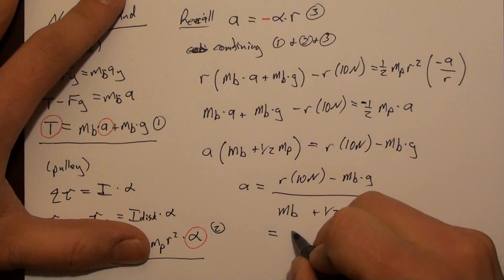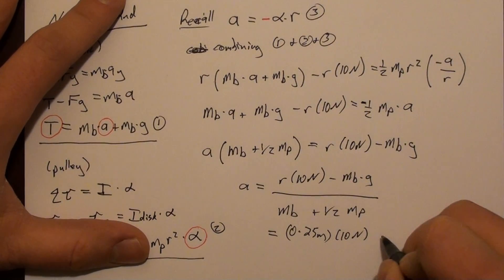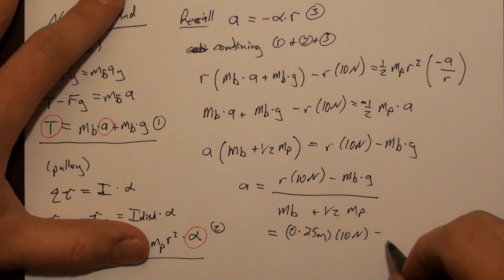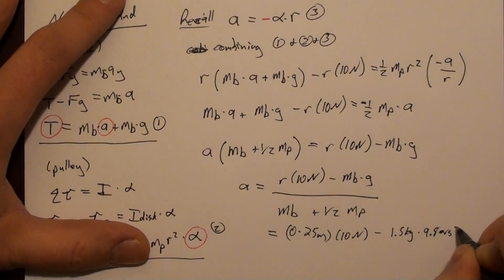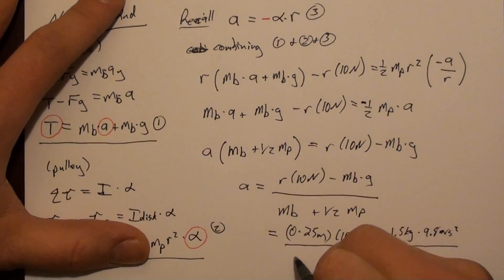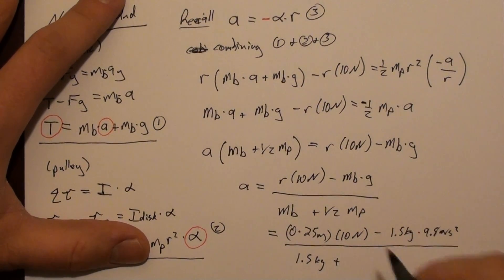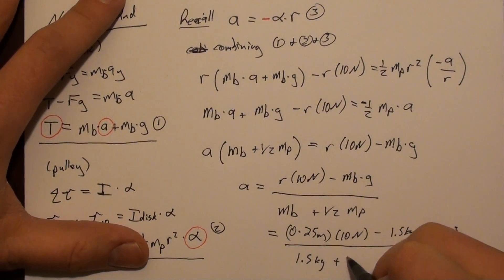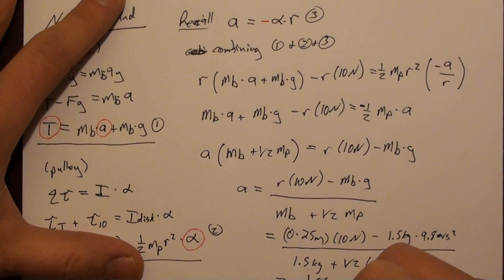So plugging numbers in, this is 0.25 meters times 10 newtons minus mass of the block is 1.5 kilograms times g, all divided by mass of the block, that's 1.5 kilograms, plus half of the mass of the pulley, which is 2 kilograms. And if you do all of that, what you get is minus 1.88 meters per second squared.